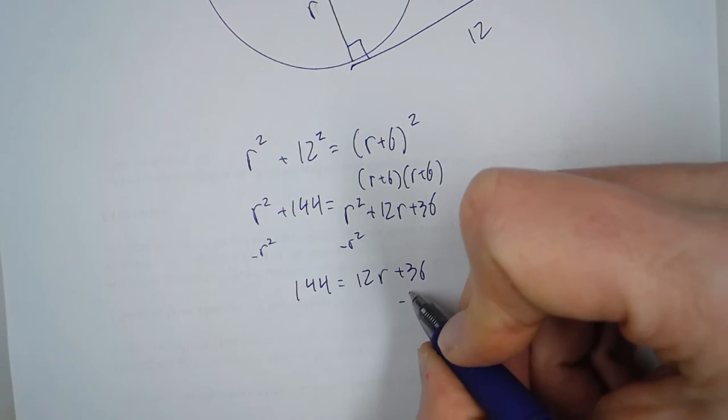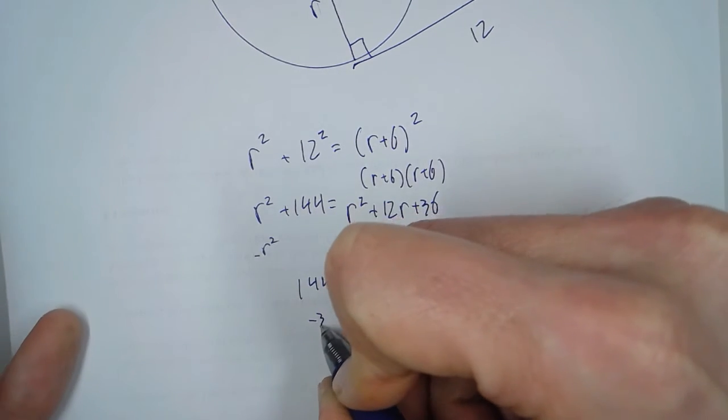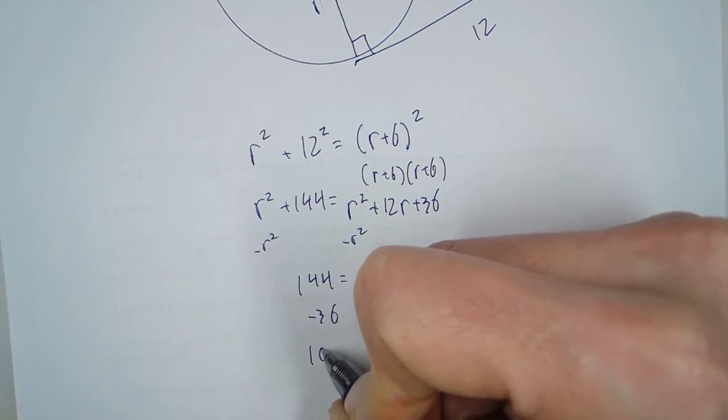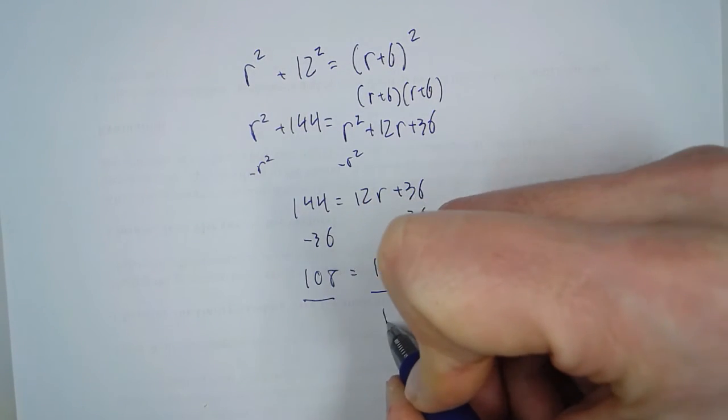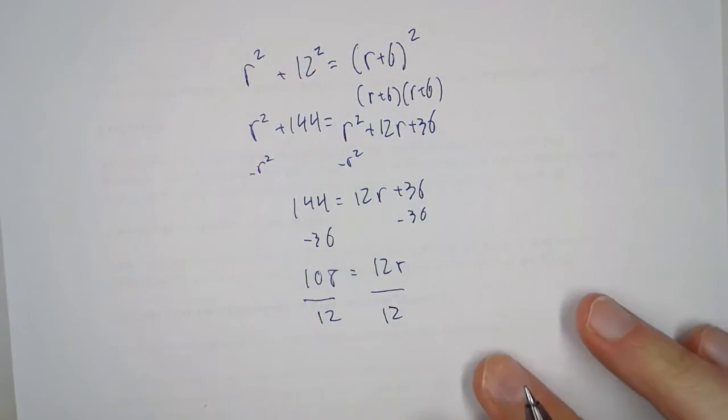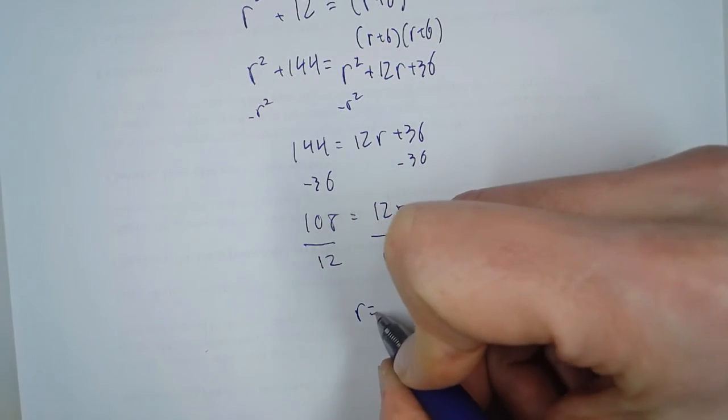If we subtract 36 from both sides, we get 108 equals 12R. Then we divide both sides by 12, so we get R equals 9.